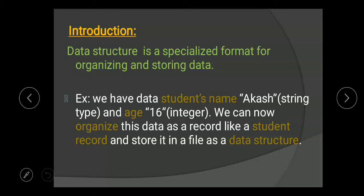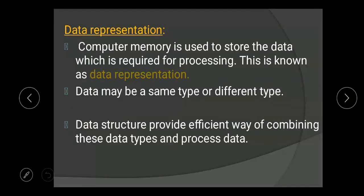we can organize this data as a record, like a student record, and store it in a file as a data structure. So we have student name and student age. The data types of those fields are different — one is string type, another is integer type. Organizing those different data types as a record is what we call a data structure.